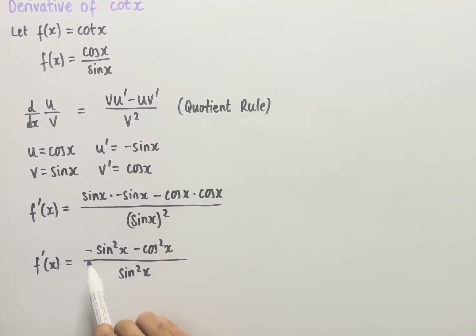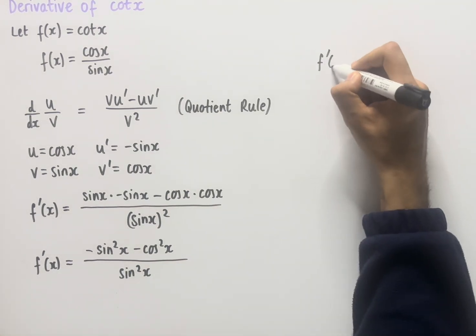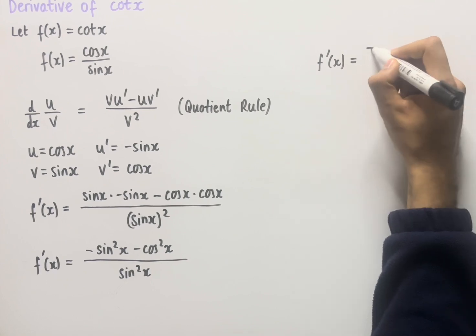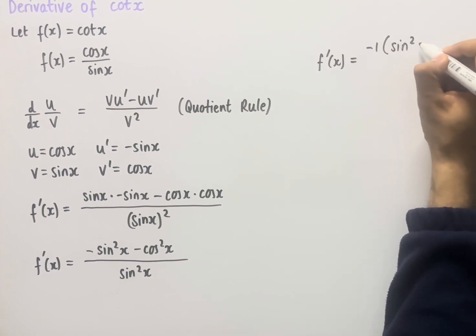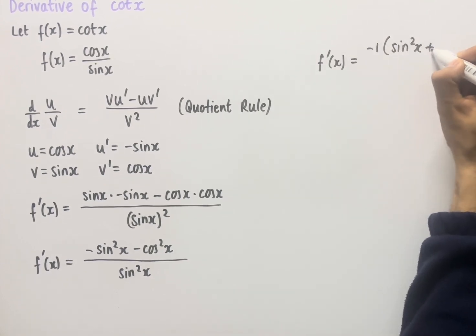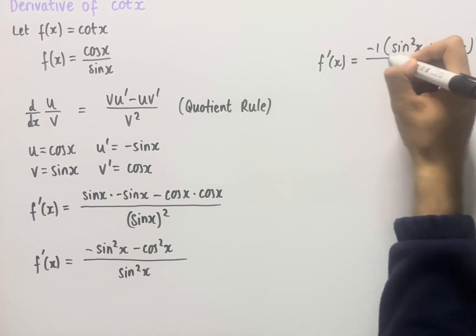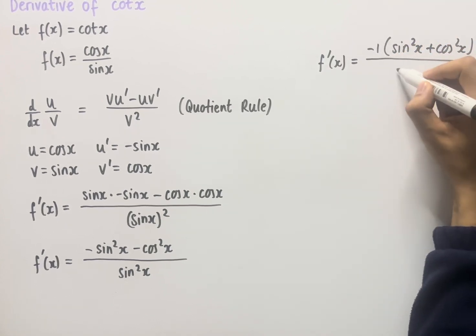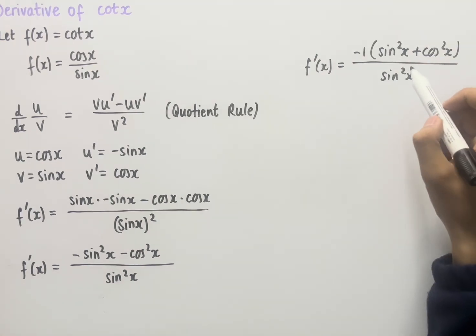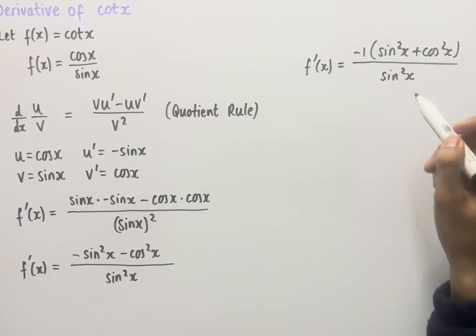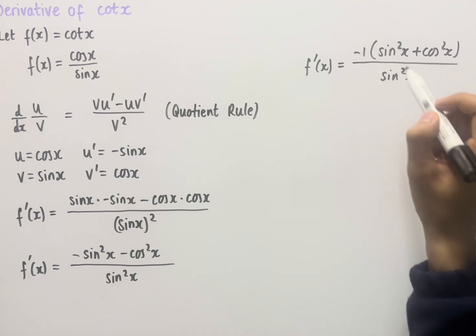Now if we factorize minus one out, we end up with f dash of x which equals minus one times sin squared x plus cos squared x, all over sin squared x. And since sin squared x plus cos squared x equals one, we have in the numerator minus one times one, which equals minus one.